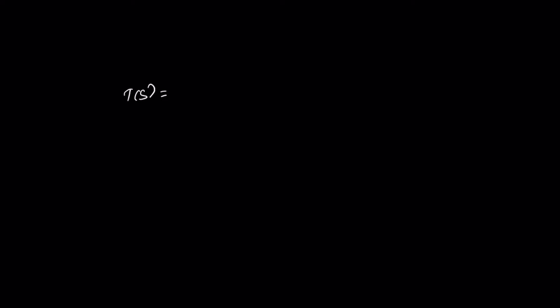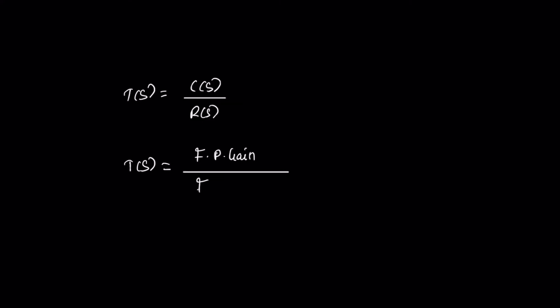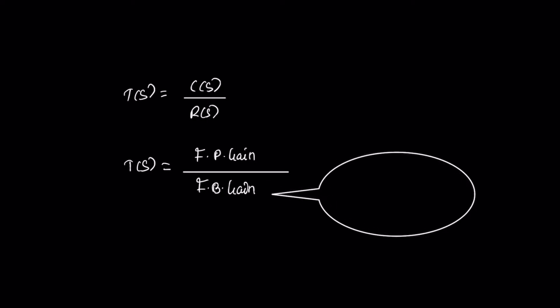Normally the transfer function T(s) is equal to the ratio of the Laplace transform of output to the Laplace transform of input. In the shortcut pattern, T(s) equals: the numerator part is the forward path gain, and the denominator value is the feedback gain. In a feedback concept, if the feedback is positive, the result is negative; if the feedback is negative, the result is positive.